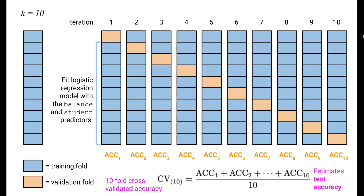10-fold cross-validation for classification is completely analogous to the regression setting. We split the training data into 10 folds. In each iteration, we hold out one fold for evaluating accuracy and use the remaining 9 folds for training our logistic regression model with the balance and student predictors. Overall there are 10 iterations, giving us 10 estimated accuracies, which we average to get an estimate of the true accuracy on unseen data — the test accuracy.